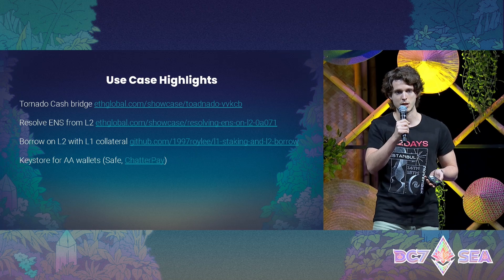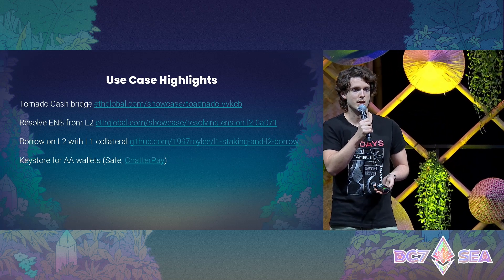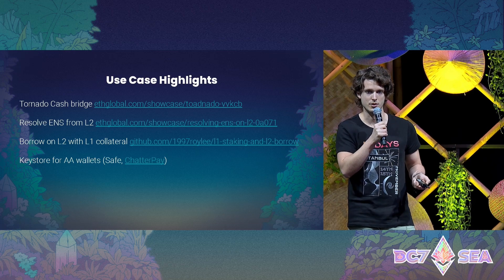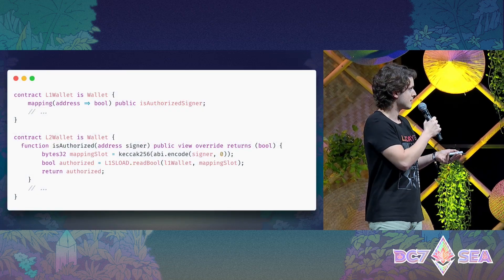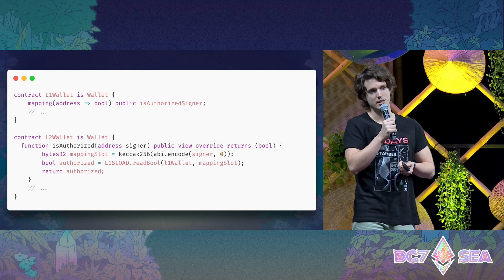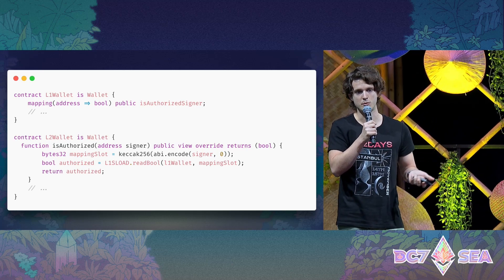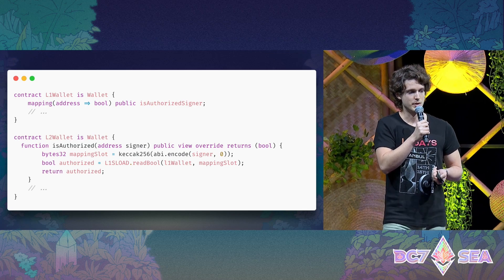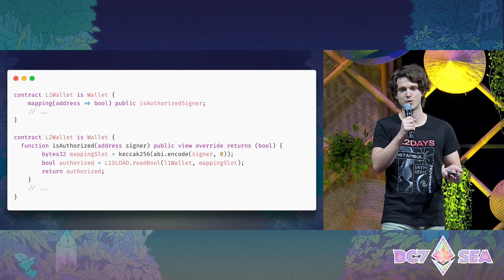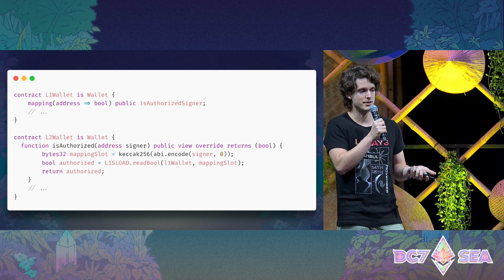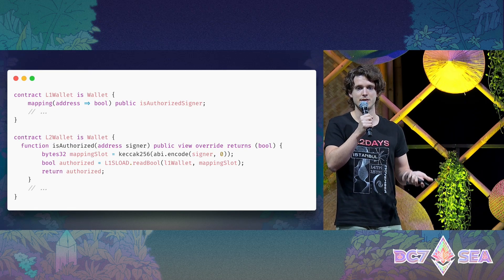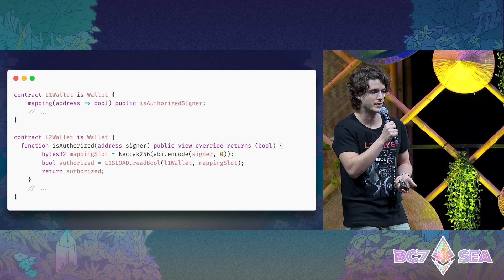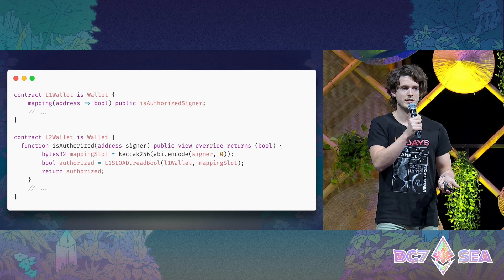For account abstraction wallets, you may have heard about keystores. The idea is that you manage all your keys on one chain — say on L1 — and when you update your keys, add or delete a key, this update is automatically propagated to all your wallets on all chains. In the L1 contract you would have a mapping storing authorized signers, and on L2 you just calculate the storage slot you're interested in and call L1SLOAD read. The sequencer fetches the data and you can decide in your L2 wallet whether the signer is authorized.